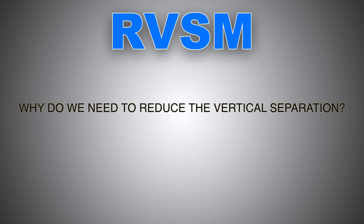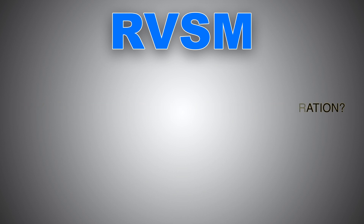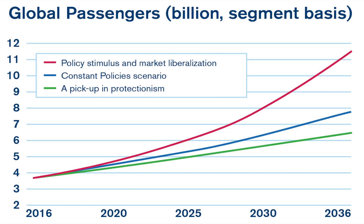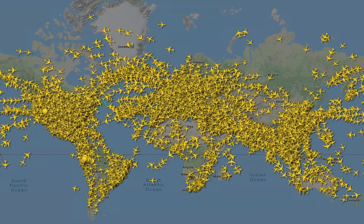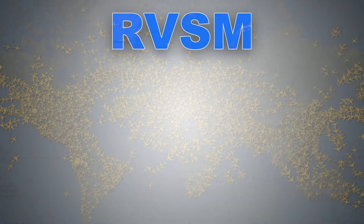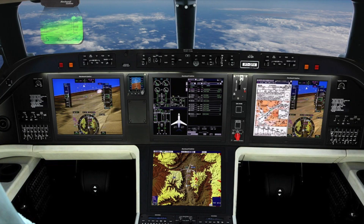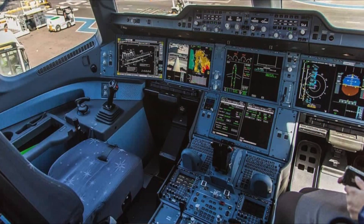Why do we need to reduce vertical separation — isn't that unsafe? The aviation industry is growing worldwide and the demand for air travel is increasing, meaning more aircraft must fit within a given airspace than ever before. As far as safety is concerned, aircraft nowadays are equipped with the most technologically advanced and state-of-the-art equipment, and there are also certain requirements that aircraft must comply with to fly within RVSM airspace.